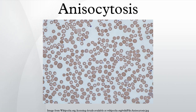Anisocytosis is a medical term meaning that a patient's red blood cells are of unequal size. This is commonly found in anemia and other blood conditions.